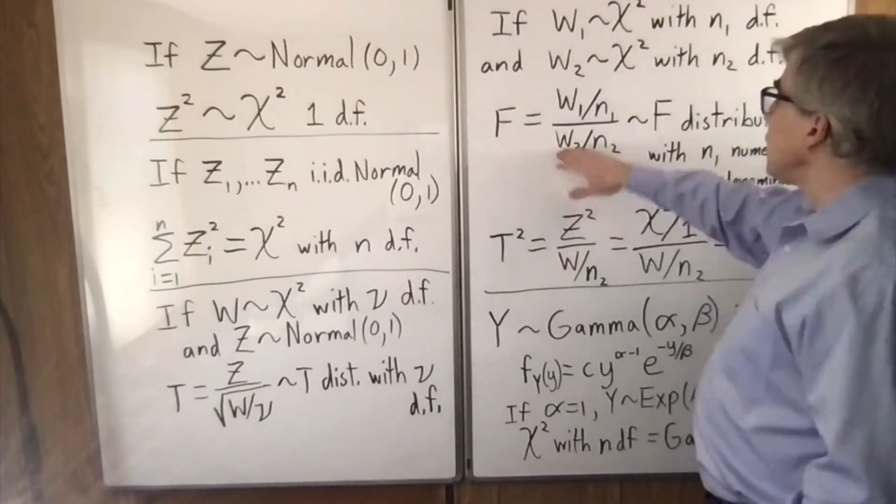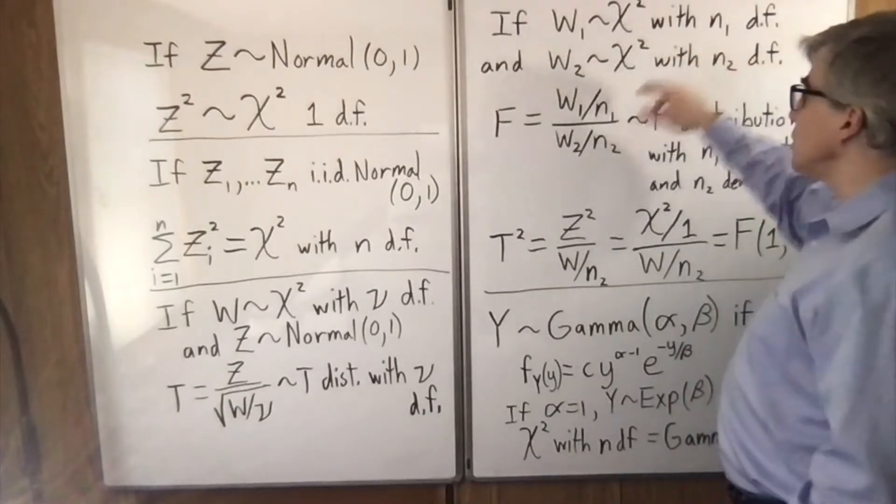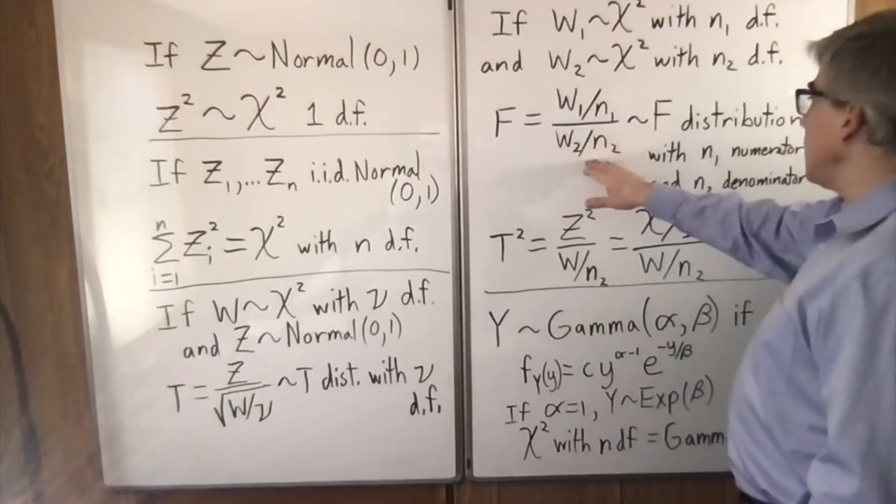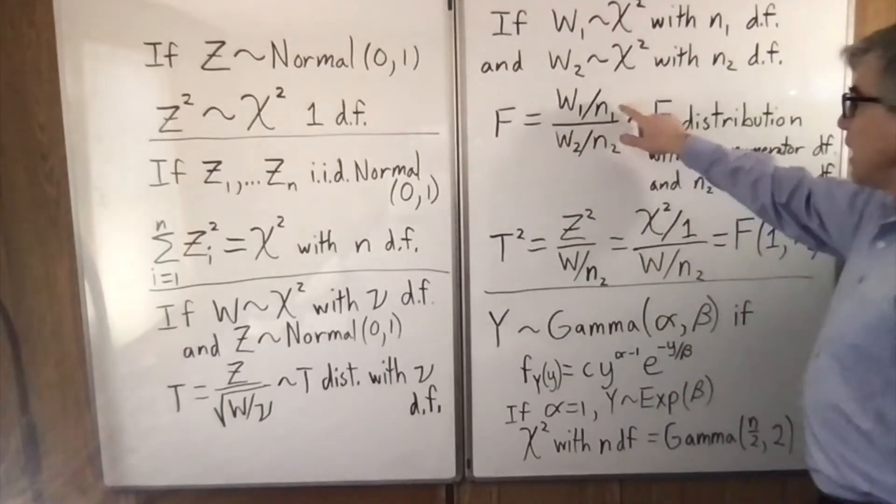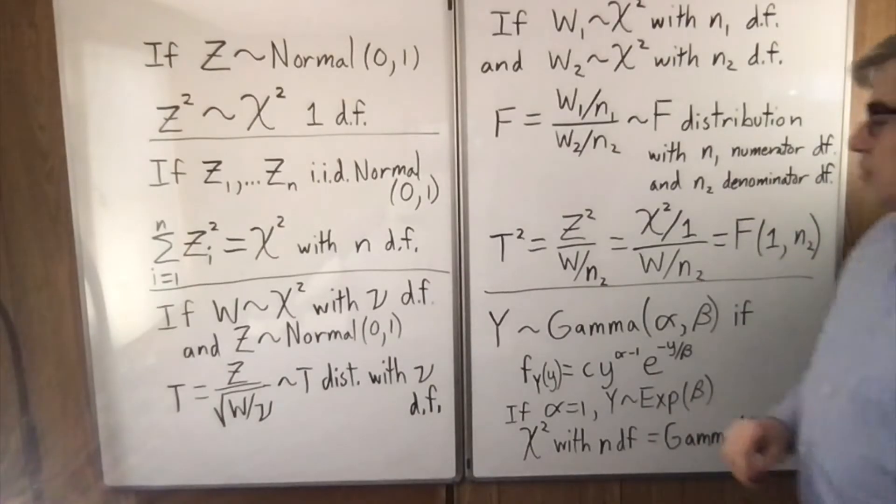An f-distribution: you have a chi-square with n1 degrees and a chi-square with n2 degrees. You divide them by their degrees of freedom and then divide them by each other. And that is an f-distribution. n1, n2 are the numerator and denominator degrees of freedom.